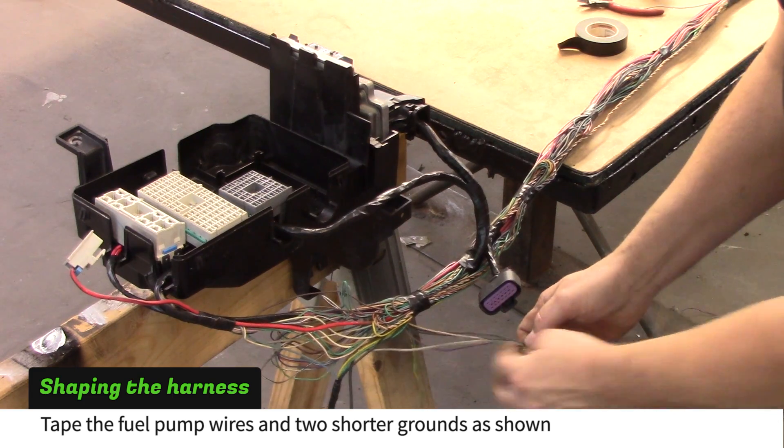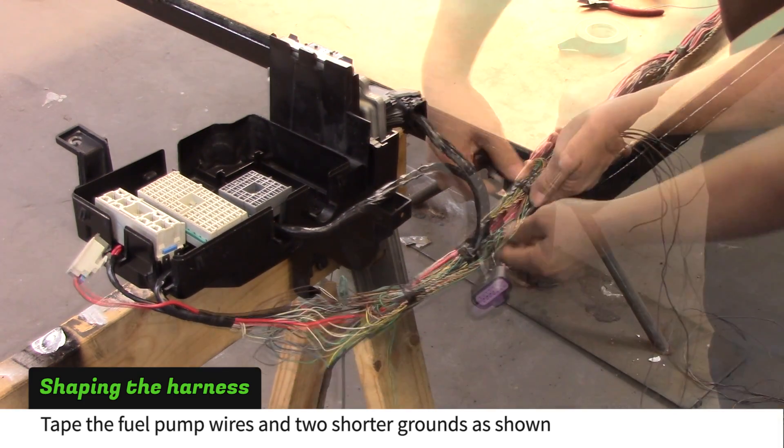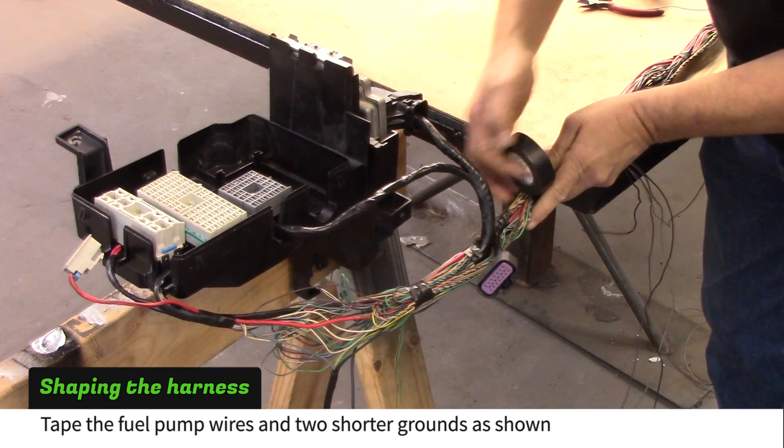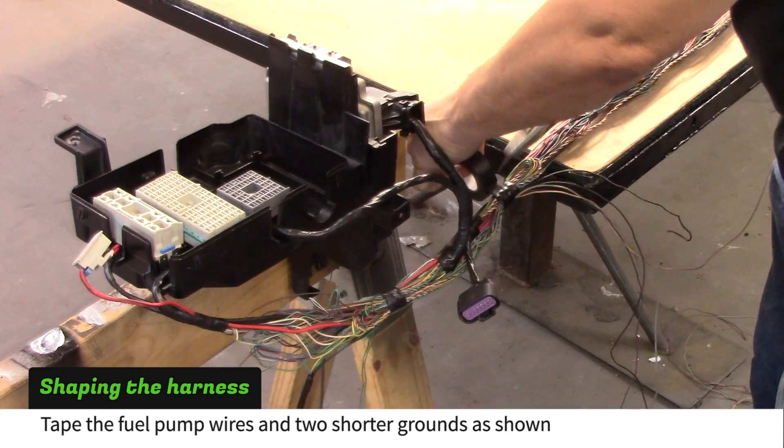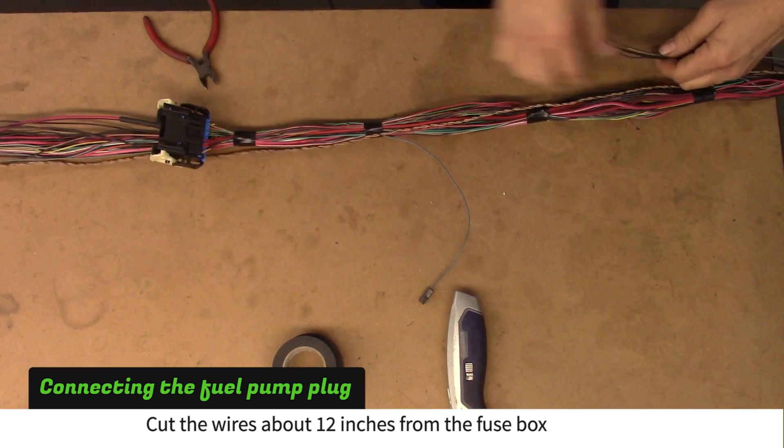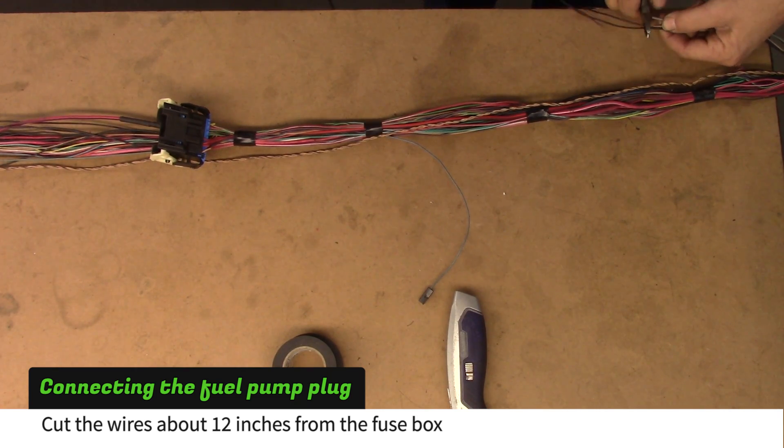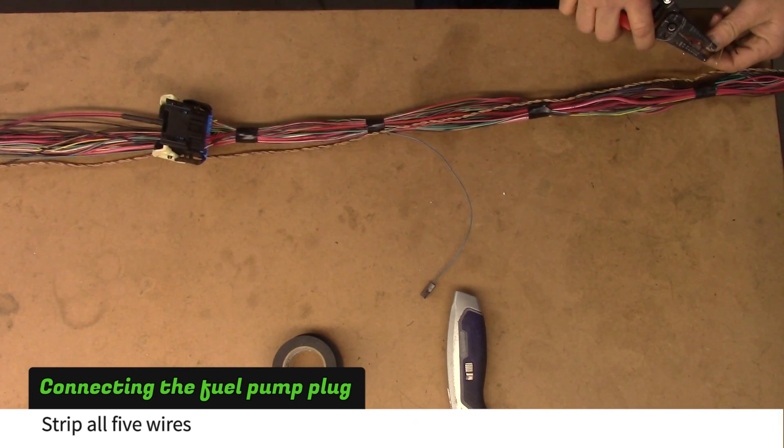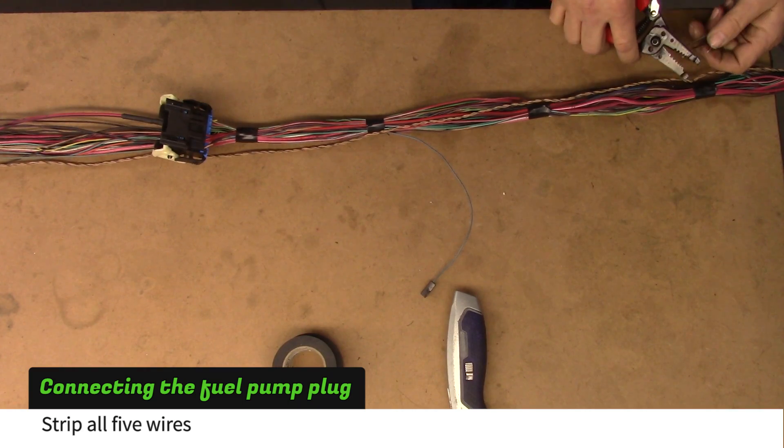Route the fuel pump wires and 2 other grounds as shown and tape them to the main harness. Cut all 5 wires about 12 inches from the fuse box. Strip the ends and twist the ground wires together.